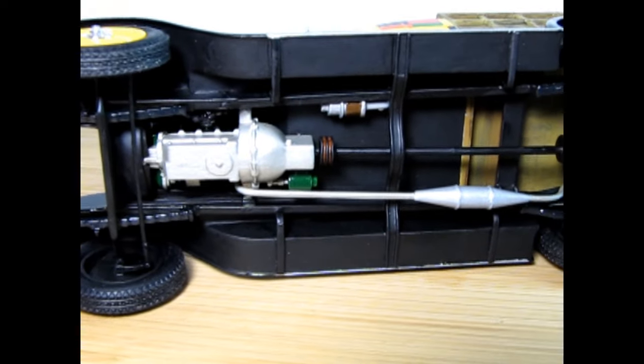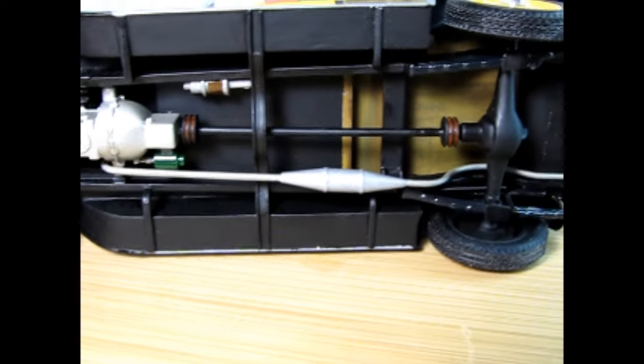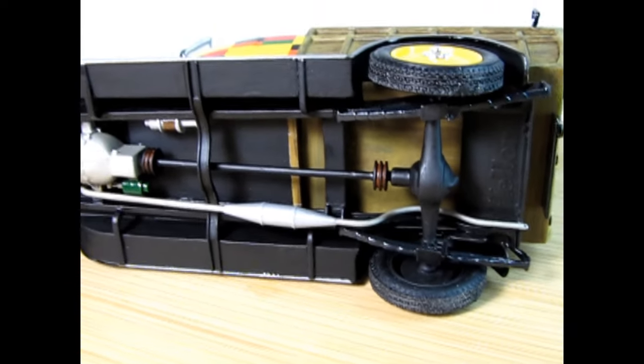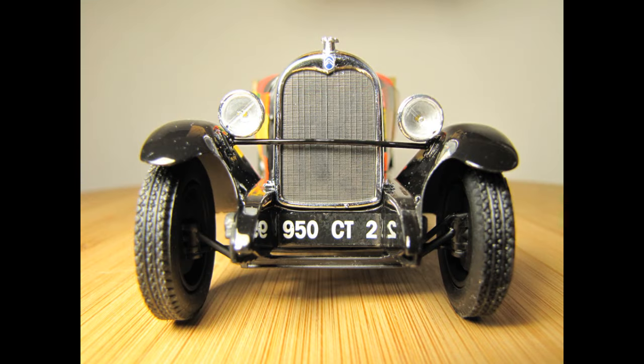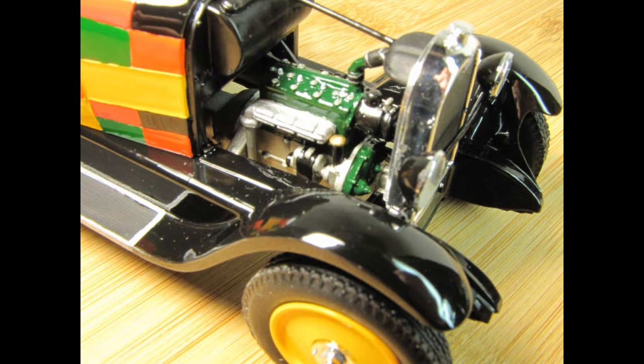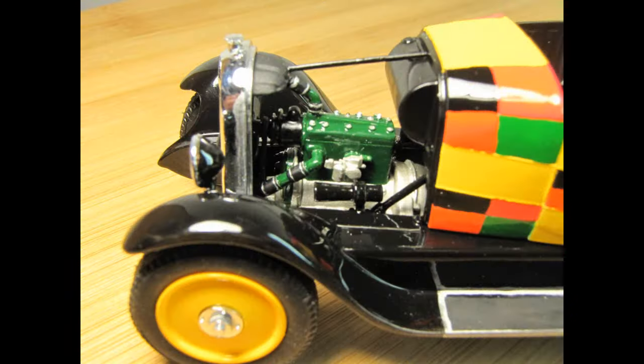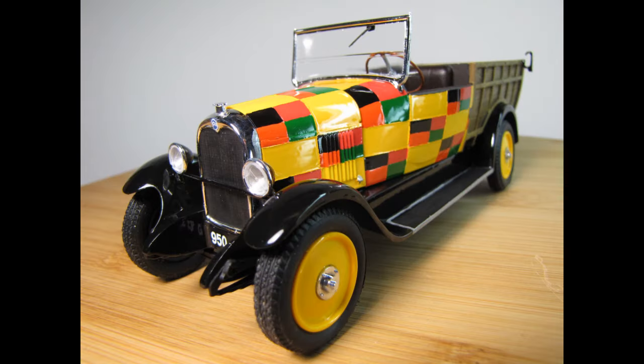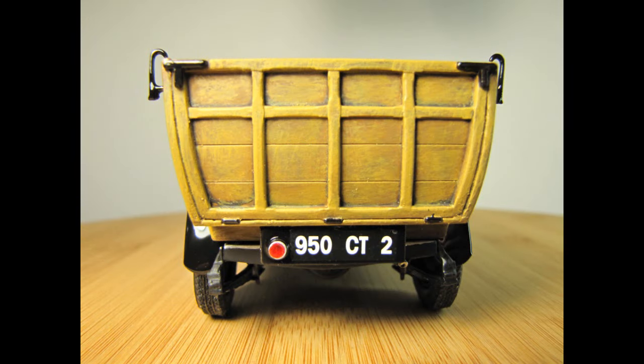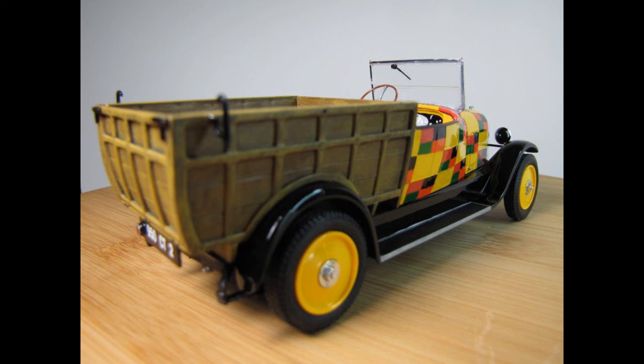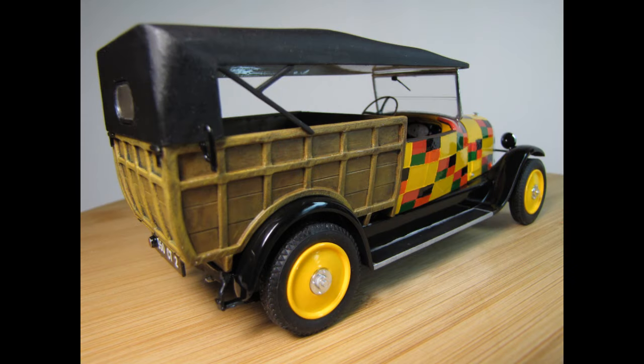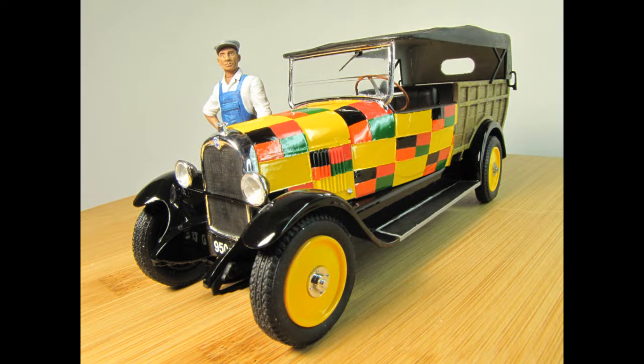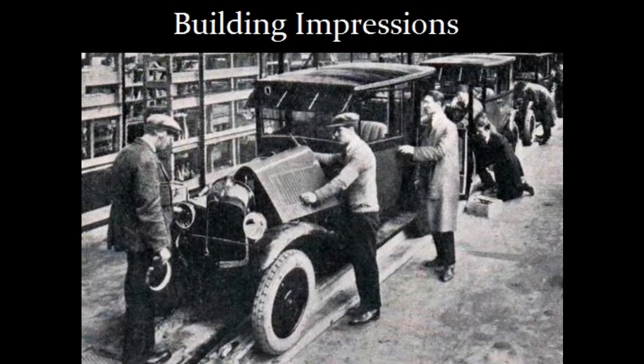And here's the undercarriage of our Citroën and you can see the engine and then those plates again as well as the rear axle and the rear springs. So very nicely done and quite easy to put together and wonderful to paint.